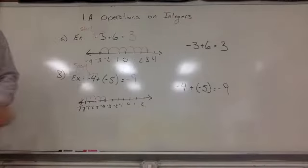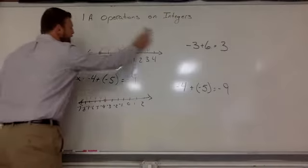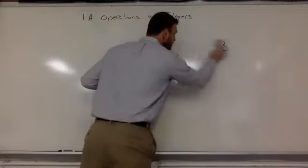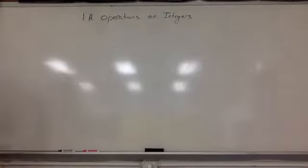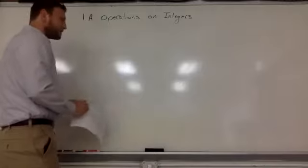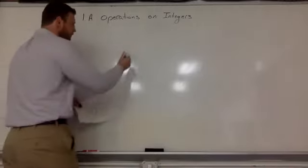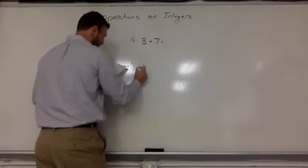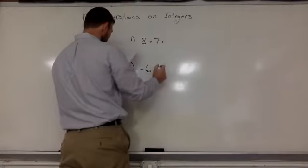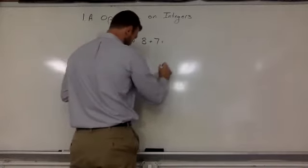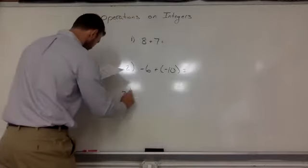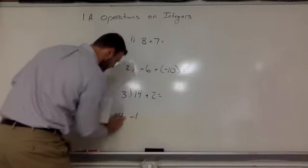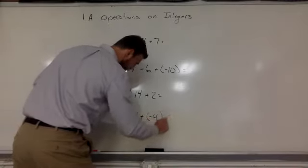Now, the reason why I don't want to do these using a number line all the time is for this reason. If you guys look at the bottom there, there's four problems. And I think some of these problems are easy. You guys are smart. You know this. So number 1 says 8 plus 7. Number 2 is negative 6 plus negative 10. Number 3 says 14 plus 2. And number 4 is negative 1 plus negative 4.